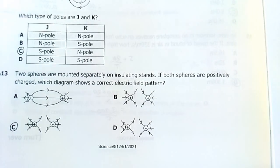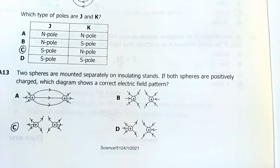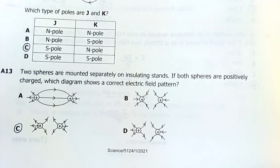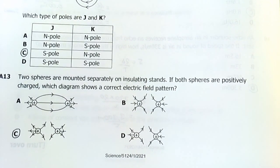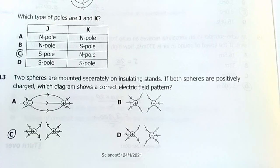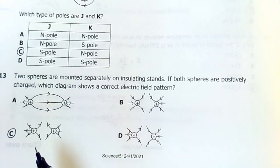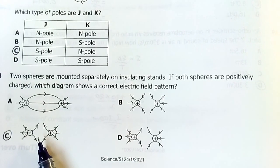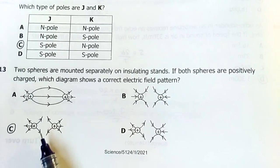Number 13: Two spheres are mounted separately on insulator stands. If both spheres are positively charged, which diagram shows the correct electric field pattern? If both are positive they will repel each other. My best diagram was this one. When I analyzed all of them, this one - they are both positive. Answer C.